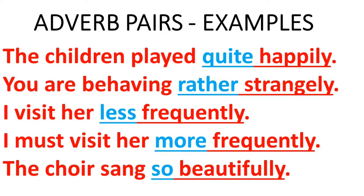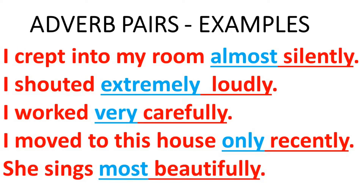Now let's look at some examples of adverb pairs. You'll see the adverb pair word in blue and the other normal adverb in red. The blue word is the extra word I add to make an adverb pair, and the -ly word is the adverb. For example, beautifully is a normal adverb, and because I added most in front of the word beautifully — which is the blue word — I made an adverb pair.